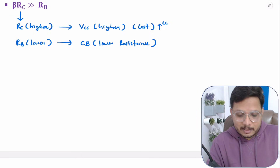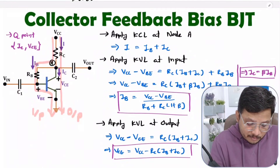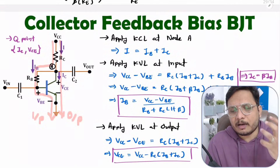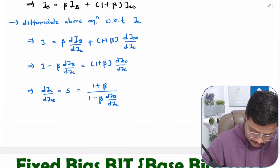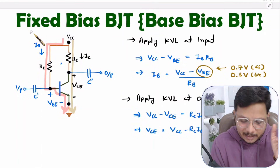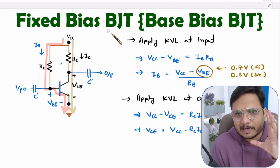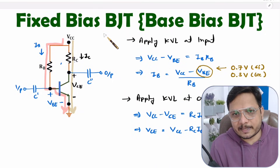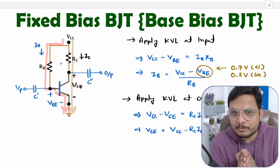So we need to understand these conditions and design the circuit accordingly. Collector feedback bias is better compared to fixed bias, but there are still some issues in terms of cost of the circuit as explained. If you have any questions please note them in the comment section — I will be happy to help you.